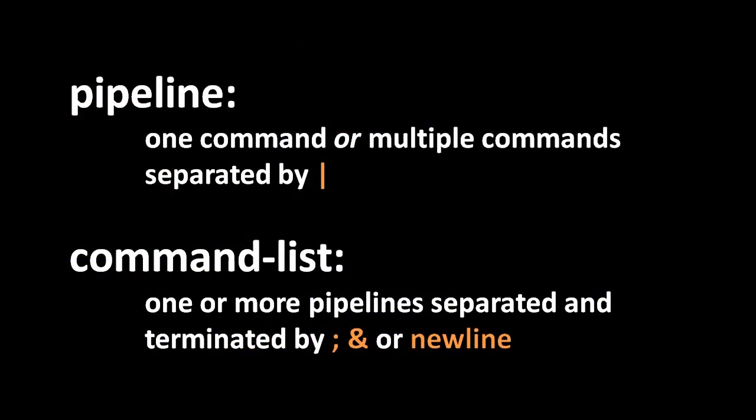Moving forward, we need to be clear on terminology. A pipeline refers either to a single process executed on its own or to multiple commands separated by the pipe character and executed in tandem connected by pipes. A command list is one or more pipelines separated and terminated by the semicolon character, the ampersand character, or the newline character. When typing commands interactively, we typically terminate each pipeline by pressing enter, inserting a newline. We can also write multiple pipelines to be executed one after the other by separating them with semicolons.